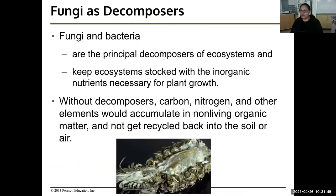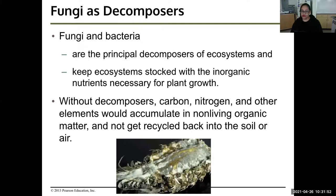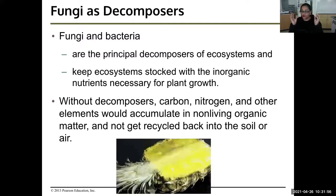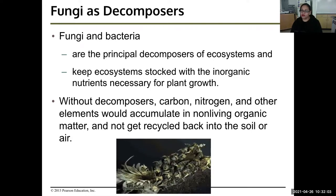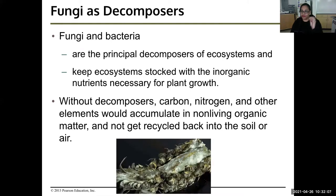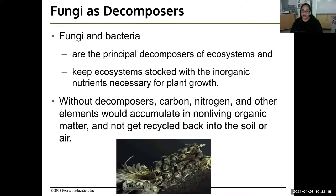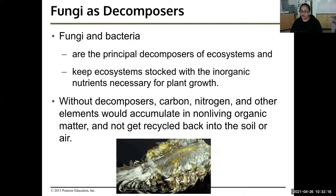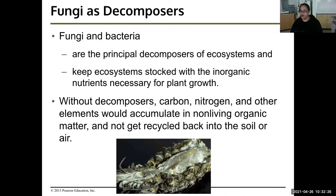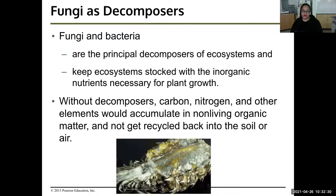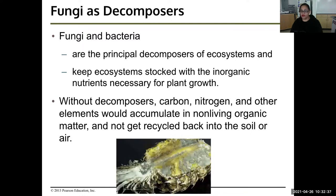Fungi and bacteria are the principal decomposers of ecosystems, keeping ecosystems stocked with the inorganic nutrients necessary for plant growth. They break down sugar (C6H12O6) into individual nutrients, put them back in the ground, and then plant roots absorb them. Without decomposers, carbon, nitrogen, and other elements would accumulate in non-living organic matter and not get recycled back into the soil or air — the same kind of mold that grows on uneaten bread decomposes organic matter.